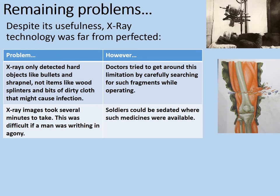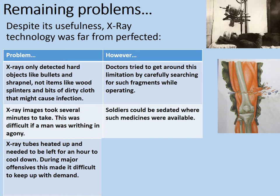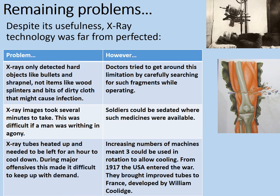Another problem was that x-ray tubes heated up and needed to be left for about an hour to cool down. During major offences this made it difficult to keep up with demand. However, increasing numbers of machines meant that three could be used in rotation to allow cooling. From 1917, the USA entered the war and brought improved tubes to France developed by William Coolidge, which didn't heat up quite so much. So there are problems, but they found ways around them.